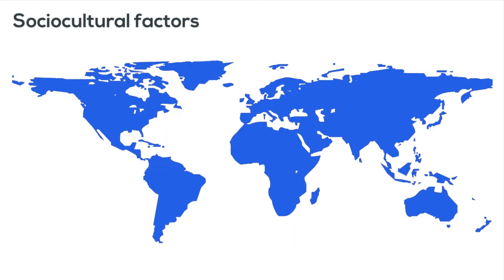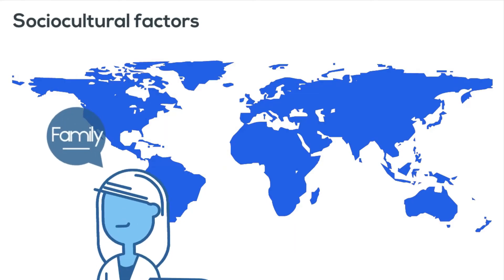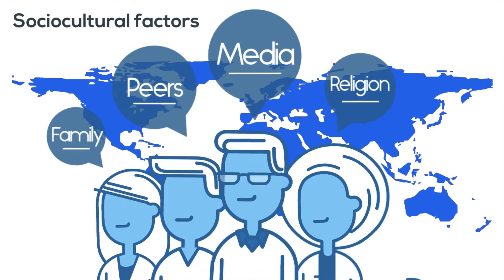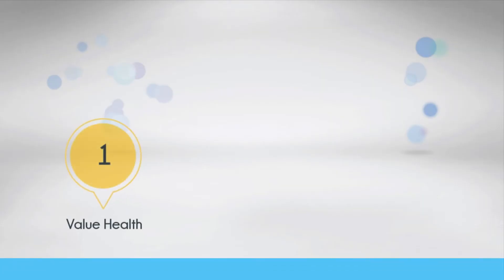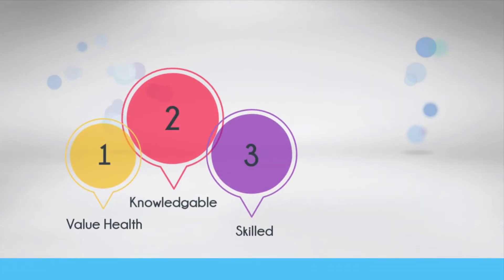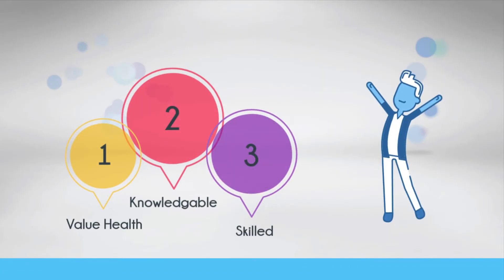Socio-cultural factors are family, peers, media, religion and culture. Much of the socio-cultural factors are rooted in your family heritage. Your parents and siblings will have a huge impact on your choice of religion, your culture and sometimes what media you consume. So if your family value health, are knowledgeable and skilled in health, you are more likely to be as well.